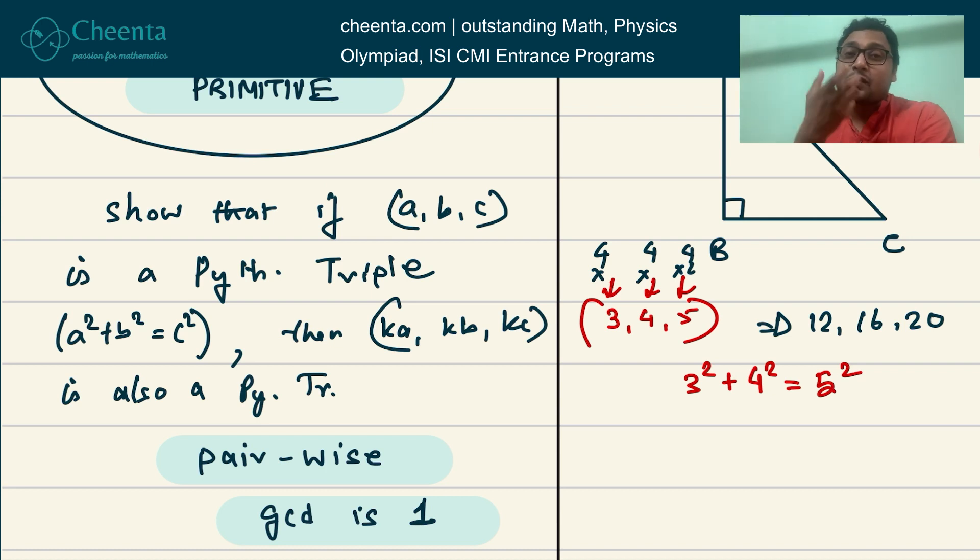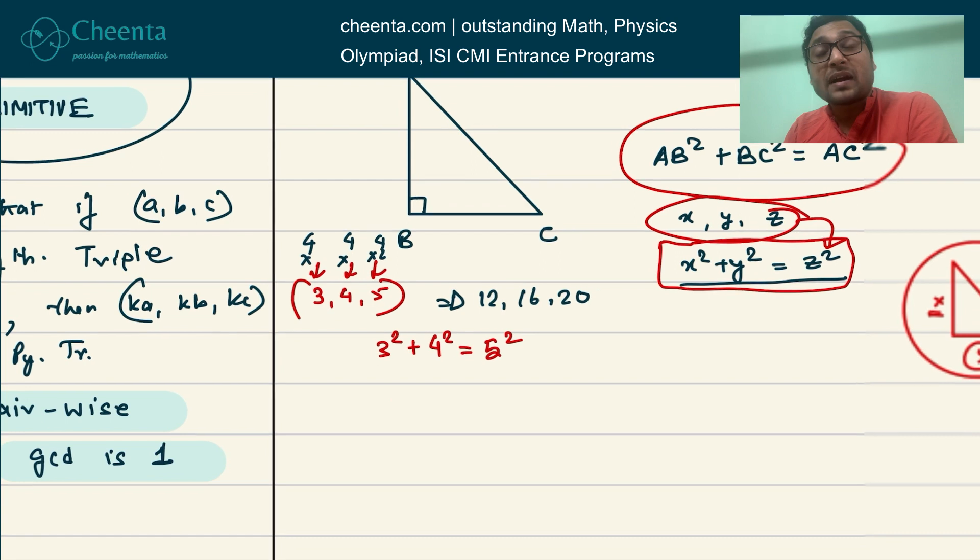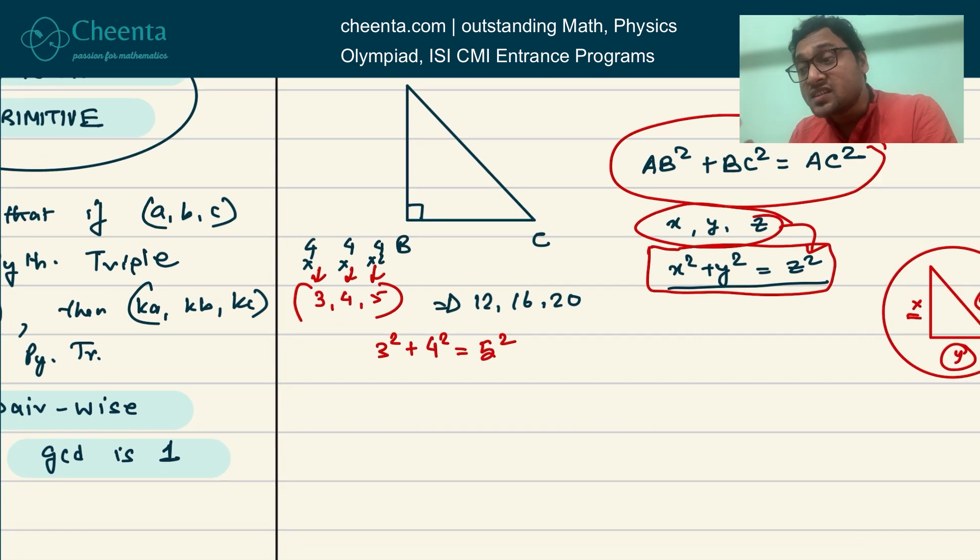It tells you that if you have one Pythagorean triple, you can in fact produce infinitely many of them. Once we have the Pythagorean triple in our understanding, we can talk about Pythagorean primitives.